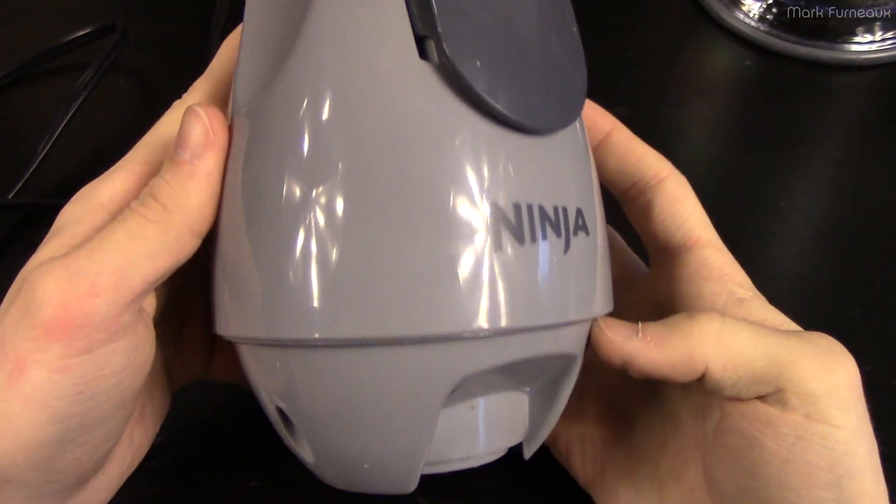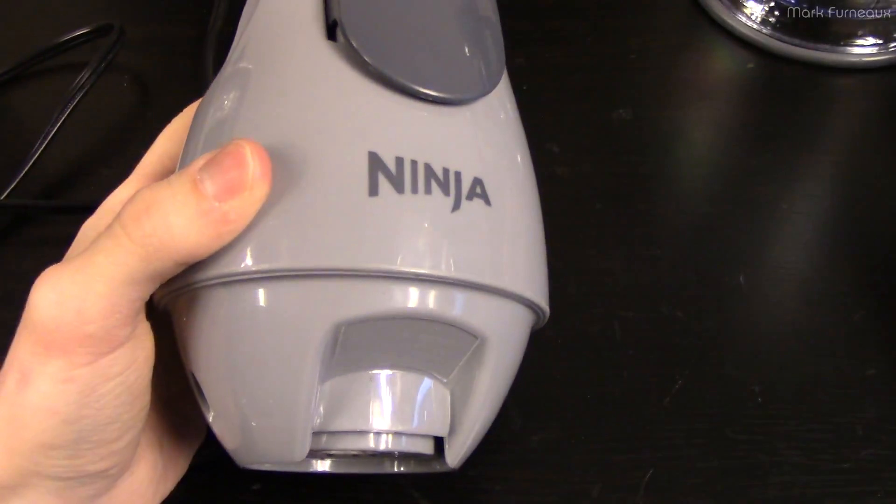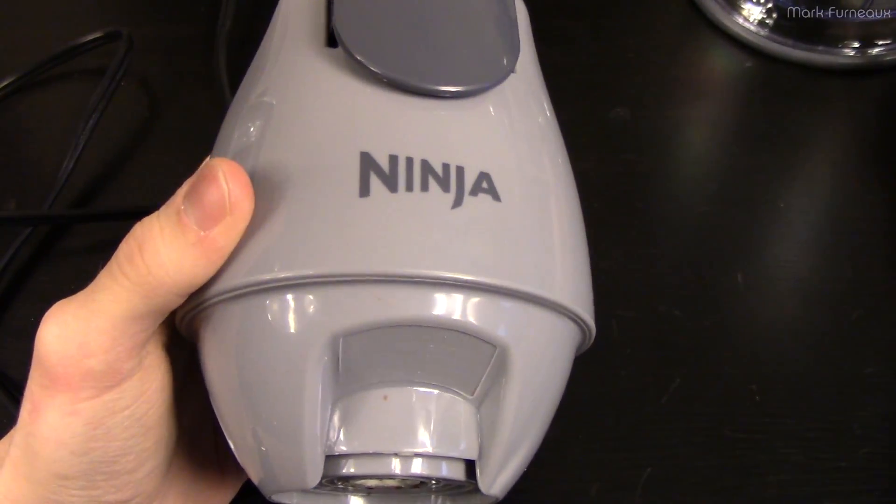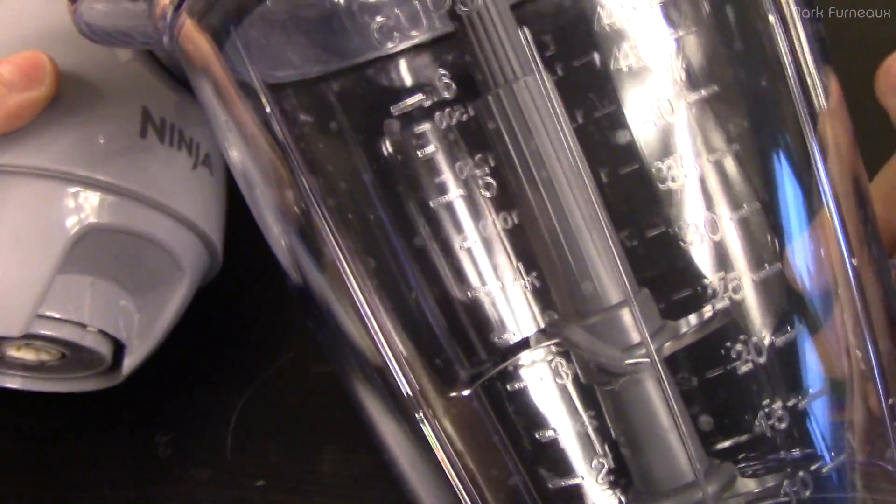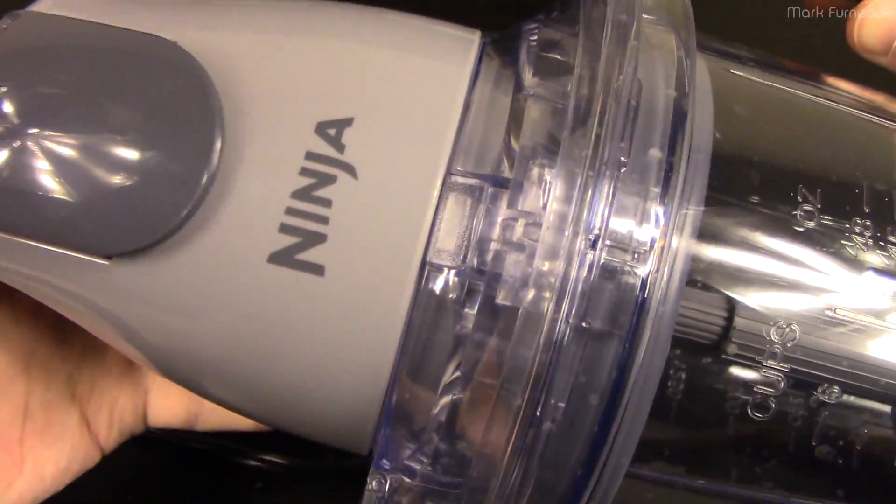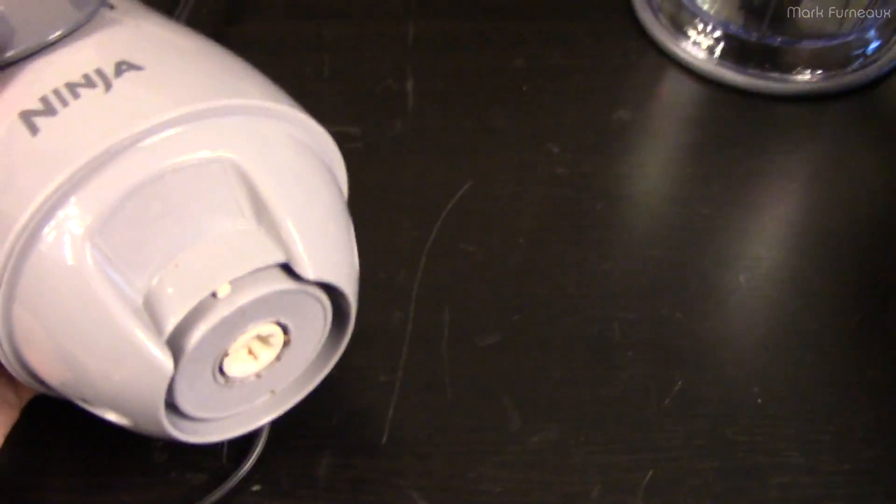They call it some sort of fancy food thing, but it's basically just a weird upside down blender. So you've got this container and this thing sits on top of it and you push the button down and it blends all of your stuff, nothing super fancy.